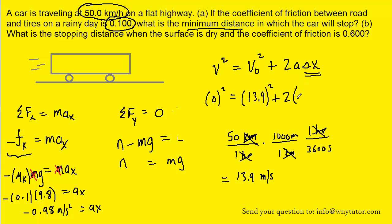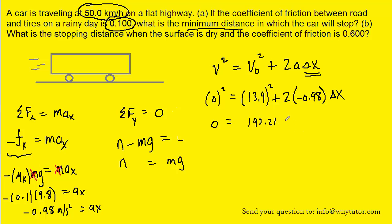Earlier we calculated the acceleration as being negative 0.98, and then the displacement Δx is our unknown. 0 squared is just 0, and then if we square 13.9 we get about 193.21. Positive 2 times negative 0.98 is negative 1.96, and then from this point forward it should be easy to solve for Δx. And when you do that you should get about 98.6 meters as the displacement. So that is the answer to part A of this question.